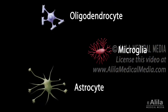The major types of glial cells in the brain include oligodendrocytes, microglia, and astrocytes.